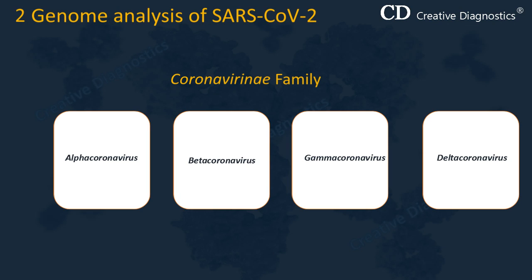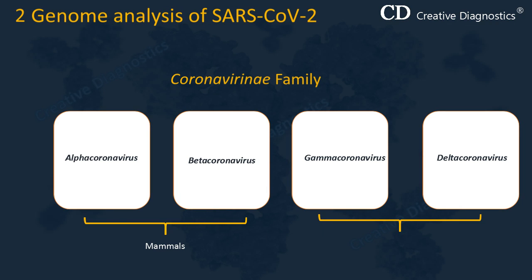Host range and tissue tropism show a lot of variation among different CoVs. Generally, the alpha coronavirus and beta coronavirus can infect mammals, and the gamma coronavirus and delta coronavirus can infect birds, but some of them can also infect mammals. SARS-CoV-2, SARS coronavirus, and MERS coronavirus all belong to the beta coronavirus genus and are zoonotic pathogens that can cause severe respiratory diseases in humans.